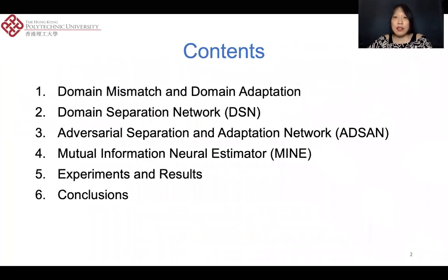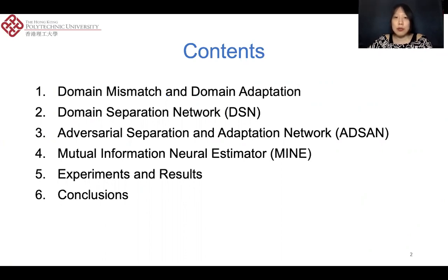Here is the outline of my presentation. Our work focuses on addressing the domain mismatch problem. We propose to apply a domain separation network and an adversarial separation and adaptation network to achieve domain adaptation. To further improve the performance, we propose to incorporate the mutual information neural estimator, which can help to retain more speaker discriminative information.